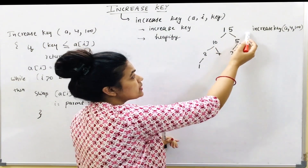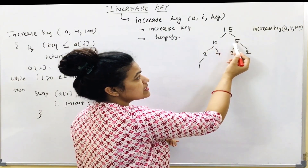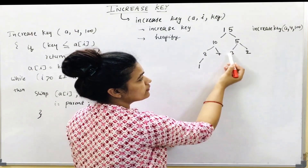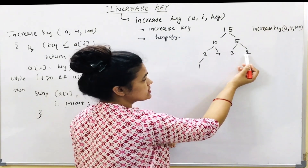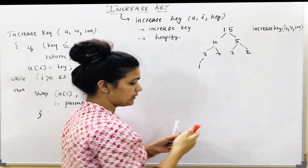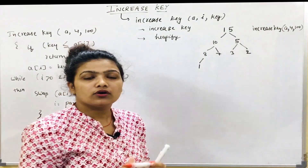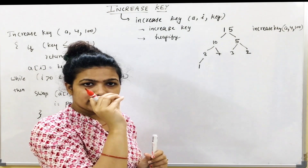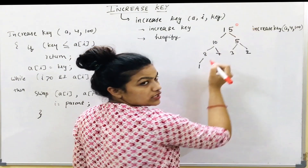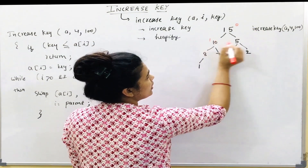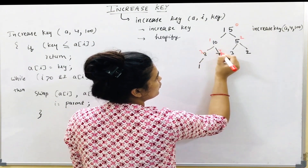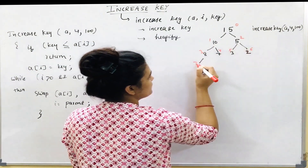We start from the first element; when it is full we move to the next, then the next, and so on. We indicate each node's index position: 0, 1, 2, 3, 4, 5, 6, 7.